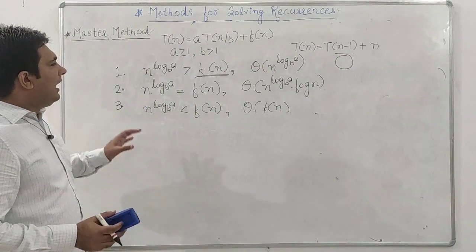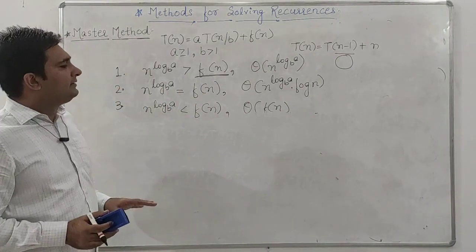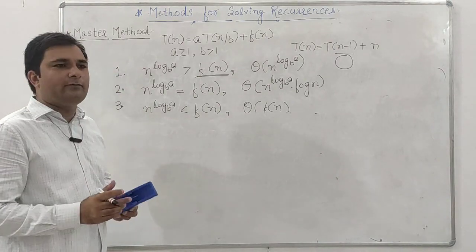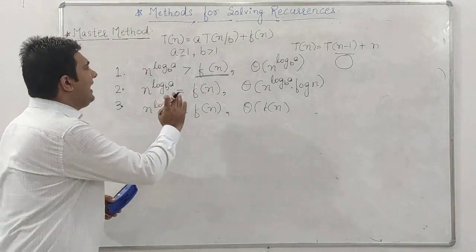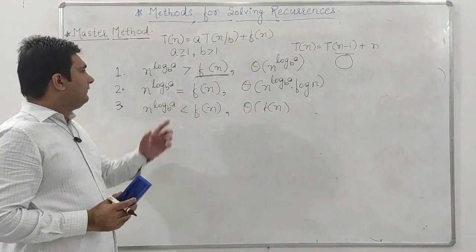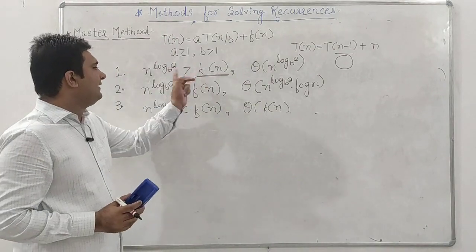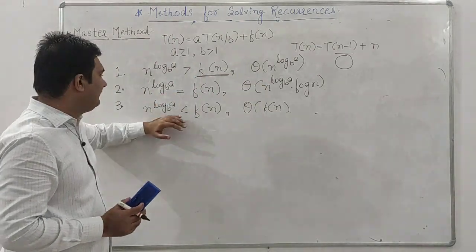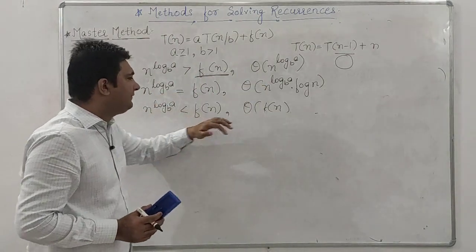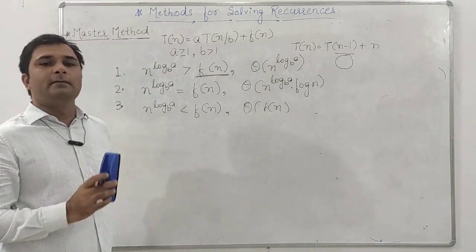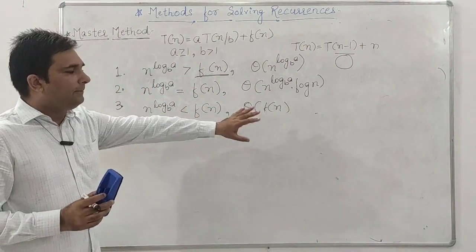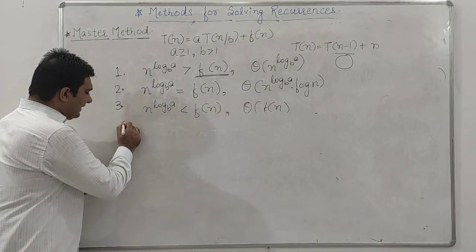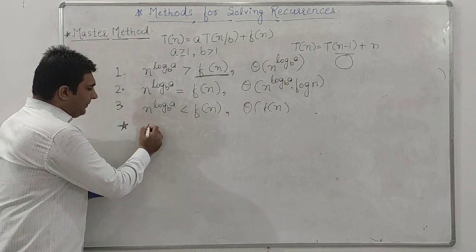To summarize: we only need to compare n^(log_b(a)) with f(n). If n^(log_b(a)) is greater than f(n), the answer is Theta(n^(log_b(a))). If both are equal, the answer is Theta(n^(log_b(a)) * log n). If n^(log_b(a)) is less than f(n), the answer is simply Theta(f(n)). Now let's look at another example moving toward the drawbacks.